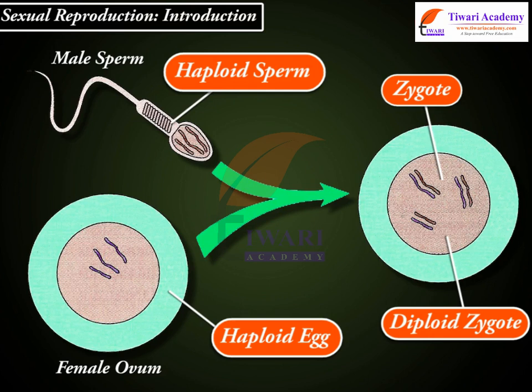Disadvantages of sexual reproduction: Since two parents of opposite sexes are needed — that is, bi-parental reproduction — except in hermaphrodite forms, it is not as easy or as frequent as asexual or uni-parental reproduction.